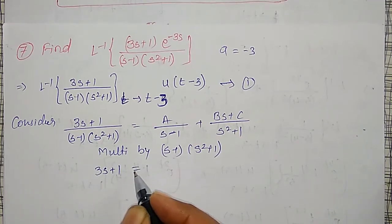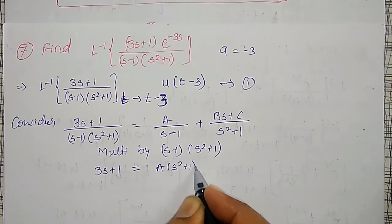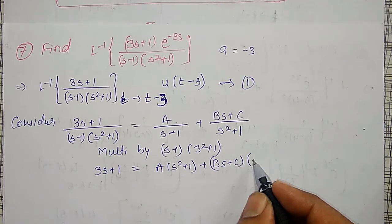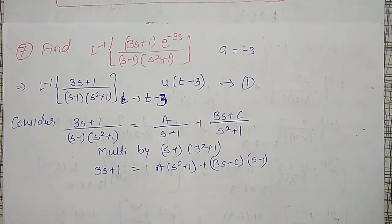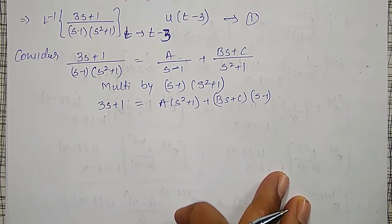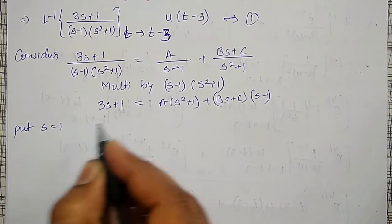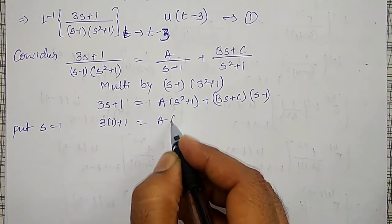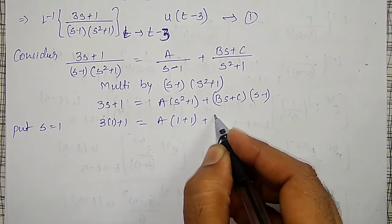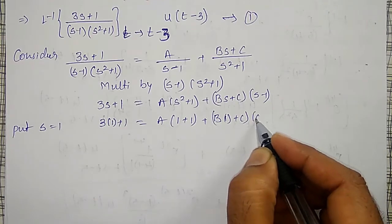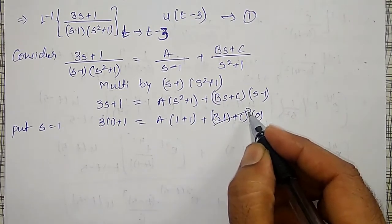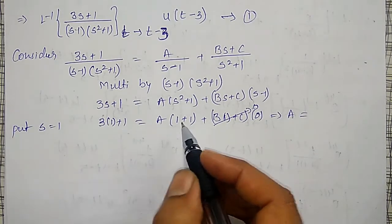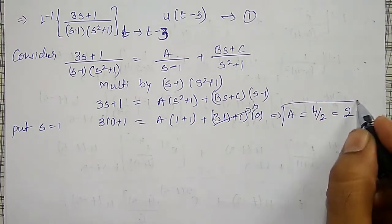To find A, put s equal to 1 so the second term becomes 0. At s = 1: 3(1) + 1 = A(1 + 1), so 4 = 2A, which gives A = 2.